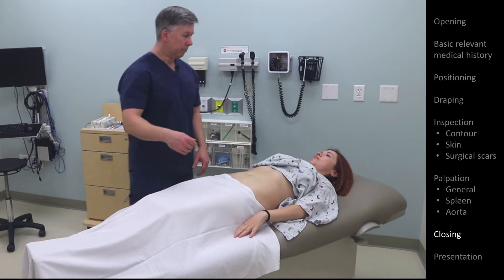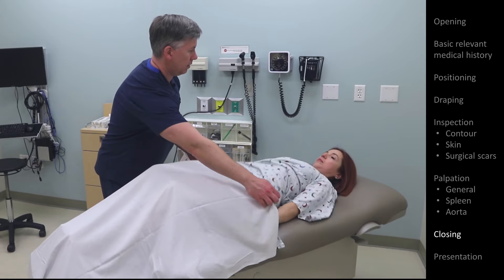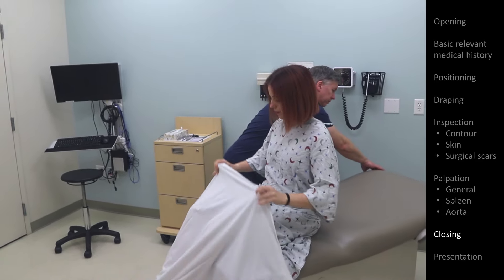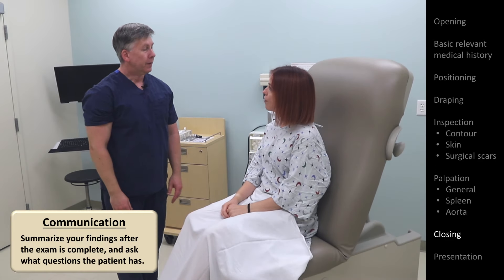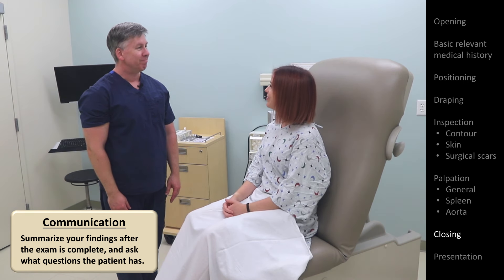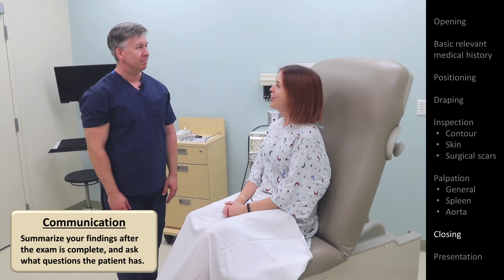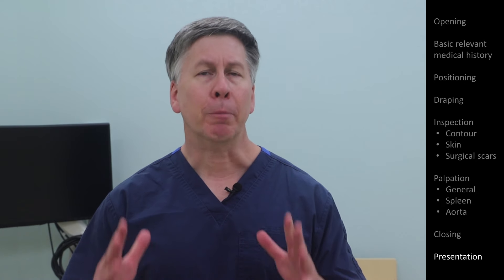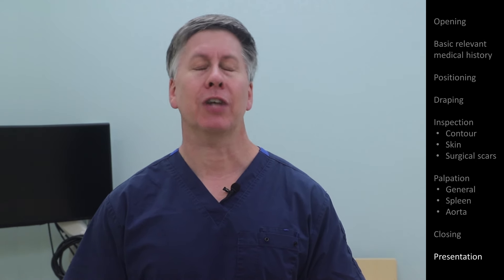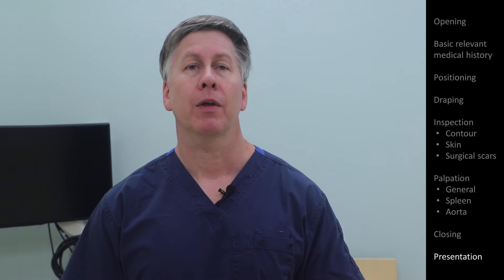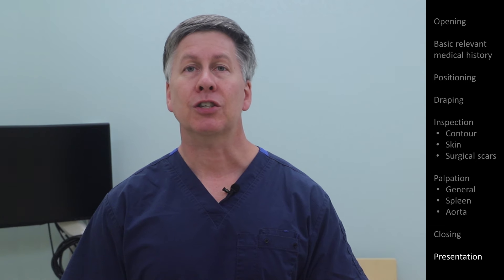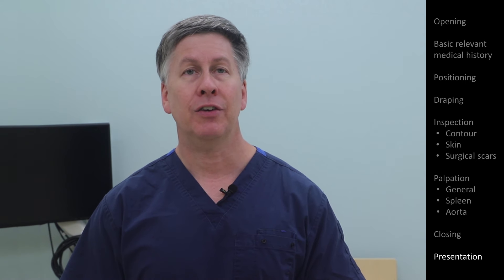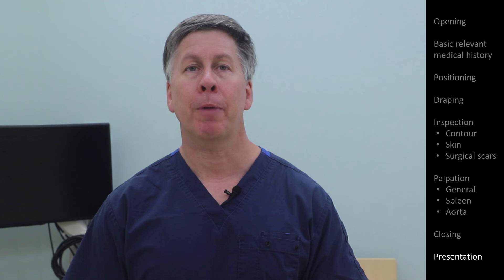Olga, I'm going to have you put your gown back down again, and I'm going to have you sit back up. I'm happy to report that your abdominal exam is completely normal. Do you have any questions for me? No, not for now. If I was describing Olga's abdominal exam during an oral presentation — if abbreviated, I could just say the exam was normal. But if the listener was expecting more specifics, I would summarize it as follows: Olga's abdomen is soft and non-distended, with no surgical scars, venous collaterals, or other skin findings. It is non-tender, with no masses palpated, no splenomegaly, and a non-palpable aorta.